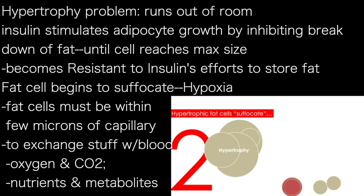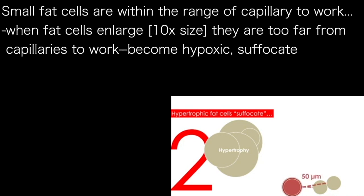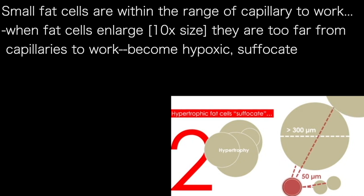This exchange only happens at the capillary — not the arteries before it, not the veins after it, or any of the smaller structures in between. Only the capillaries. So a cell must be very, very close to a capillary to allow all of this exchange and to continue to survive, including getting oxygen. If you have small fat cells, that's no problem — as I show at the bottom, they're well within the generally 50-micron range of the capillary. However, fat cells are so completely unique compared to other cell types — they can expand to more than 10 times their volume as they undergo hypertrophy. Now you have a fat cell whose diameter is so substantial that it puts even itself, let alone any neighboring fat cell, much too far from the capillary.